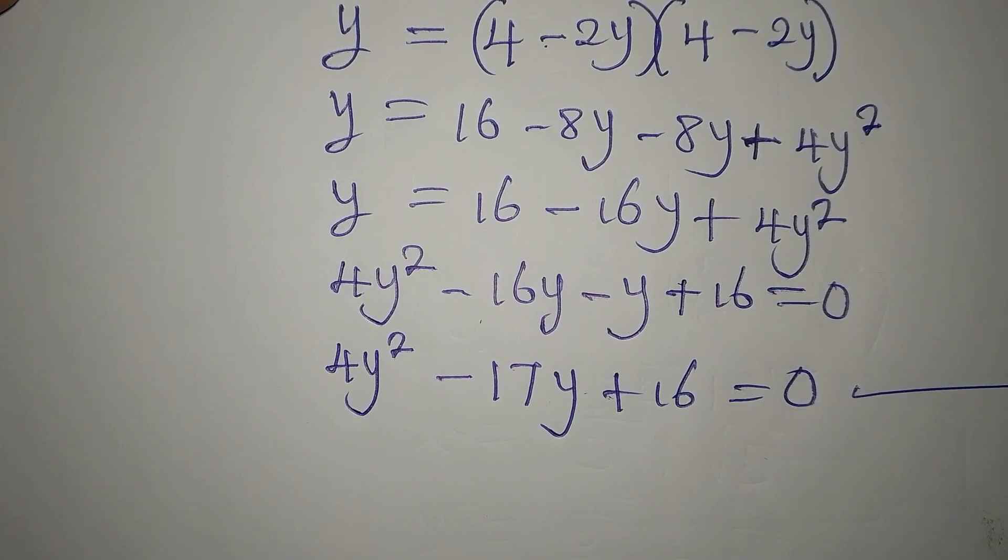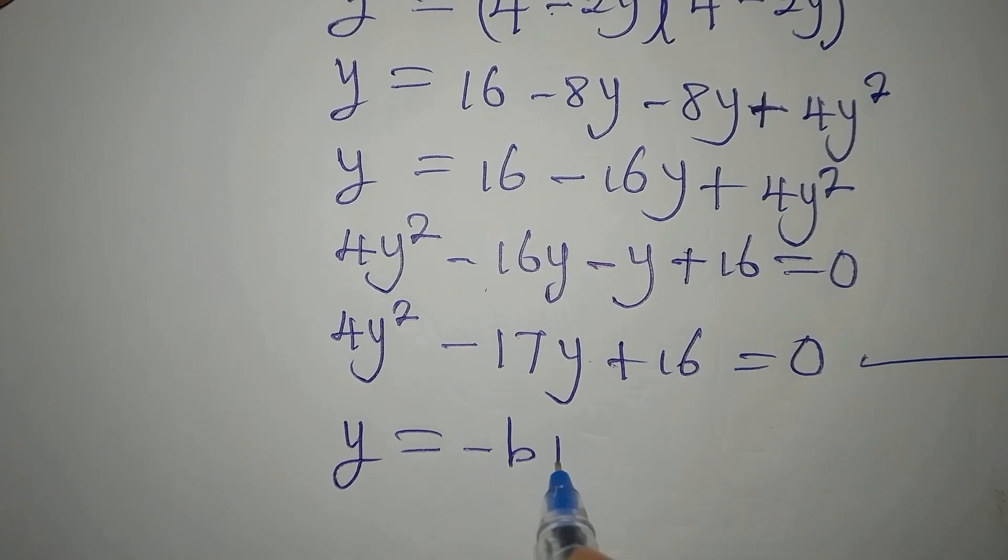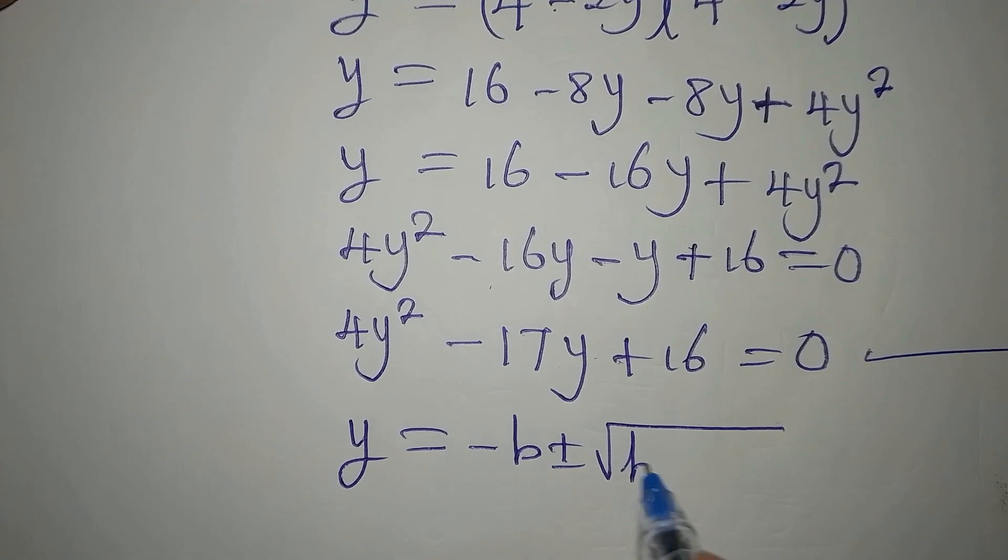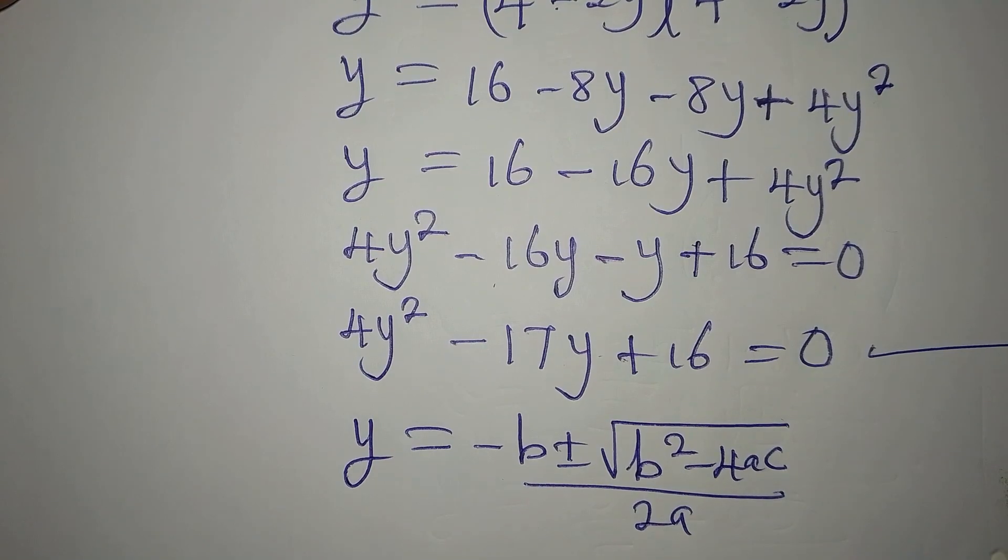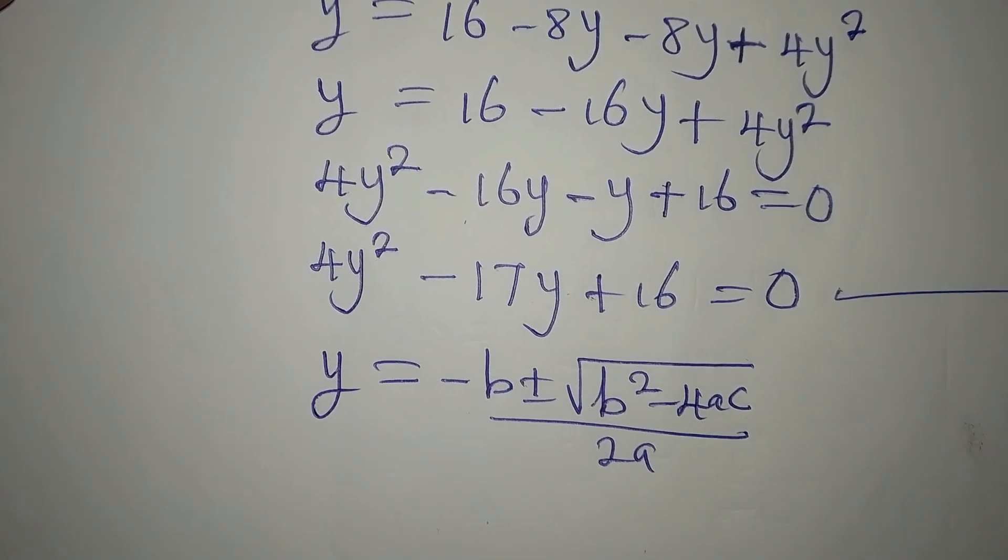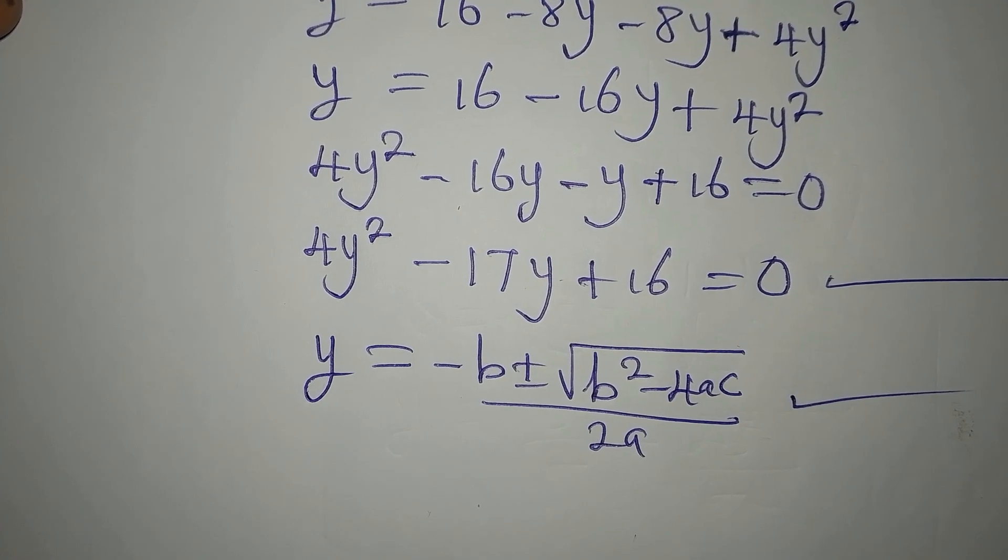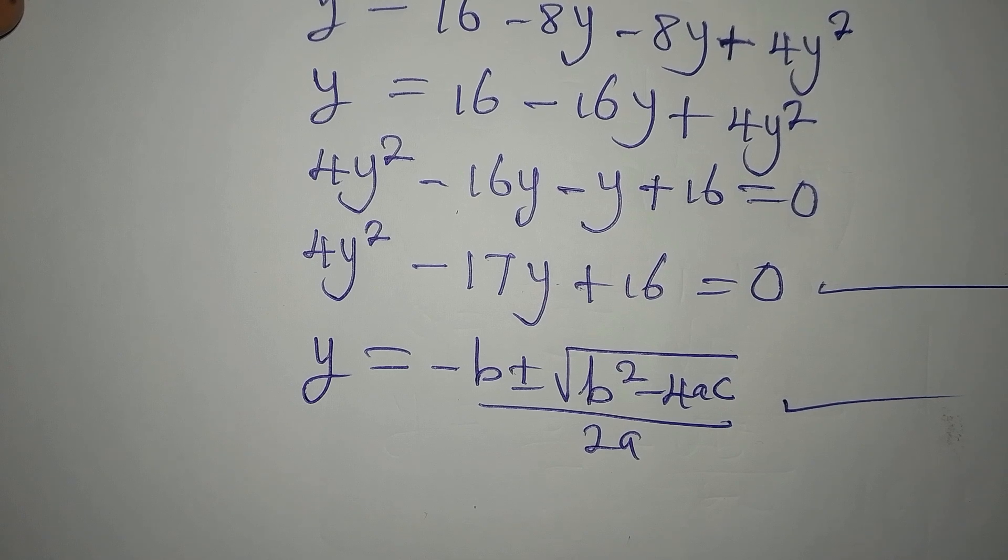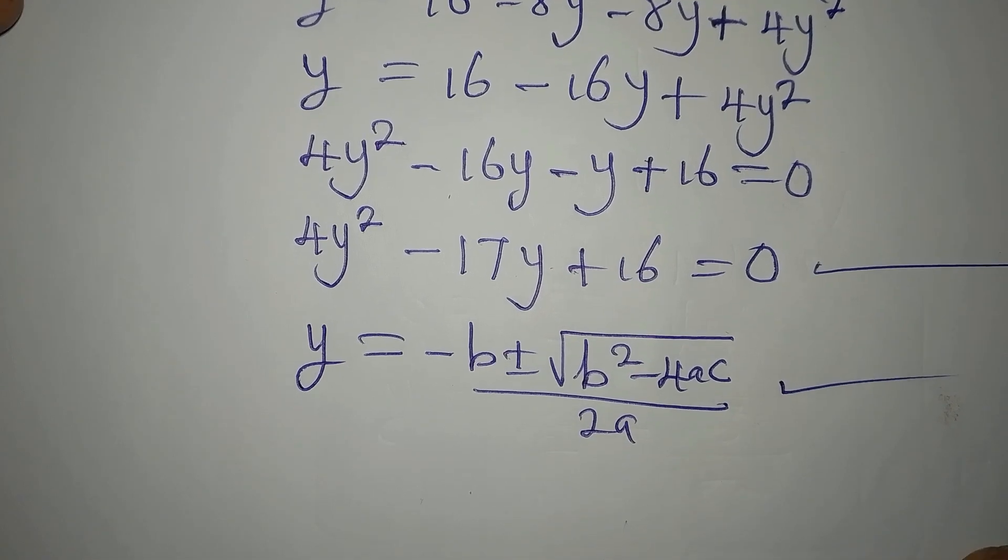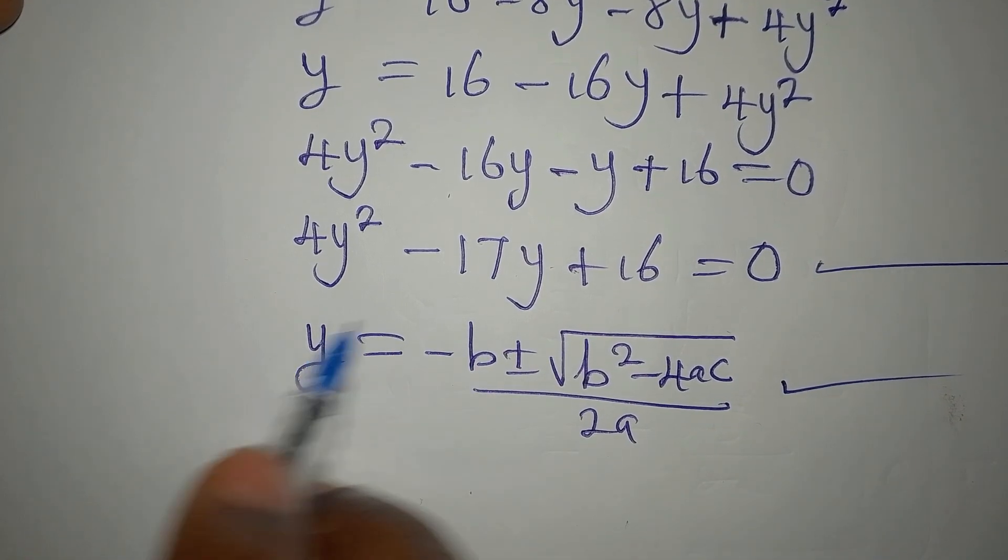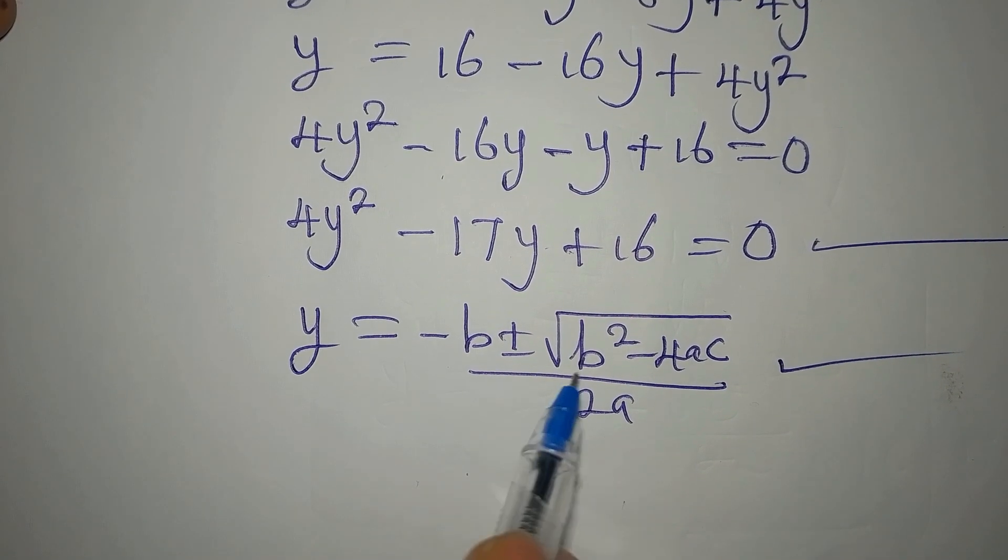Now the formula is y equals minus b plus or minus the square root of b squared minus 4ac, all over 2a. Now some students cannot use this formula because they can't have the formula off hand. I think that's the most difficult thing to do when you want to solve a quadratic equation using the formula method. Knowing the formula is the most difficult, but then you can get used to it by trying to use it often.